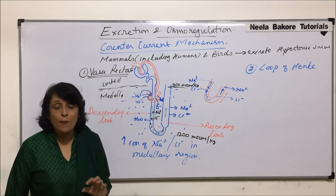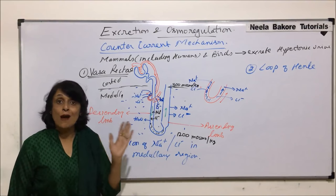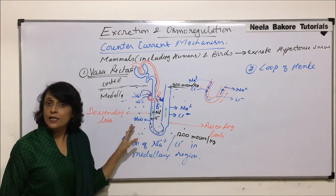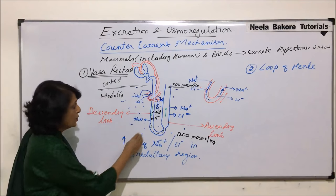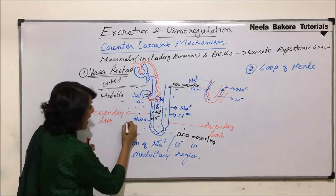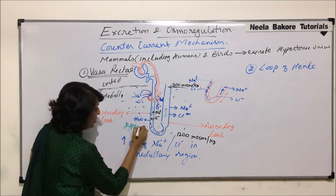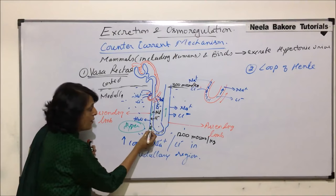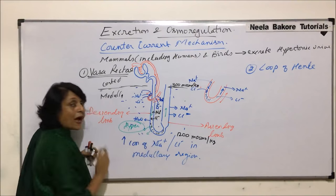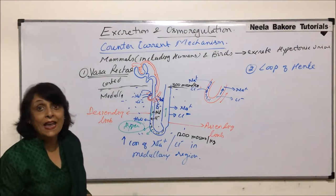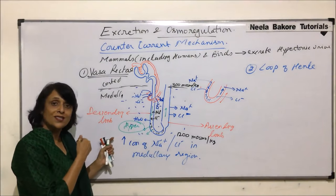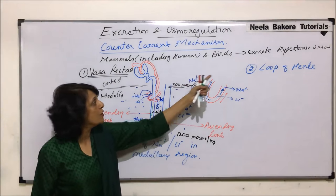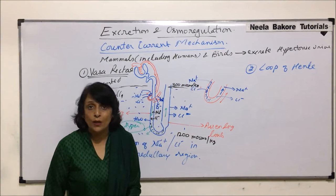Water moves from hypotonic to hypertonic. The descending limb is permeable to water, so when the outer medium becomes hypertonic due to the presence of sodium and chloride ions, water diffuses out of this loop. If more and more water is taken out of the filtrate, the urine which is going to be excreted will be hypertonic.